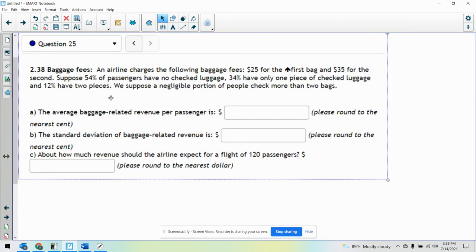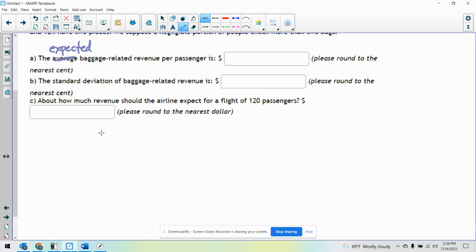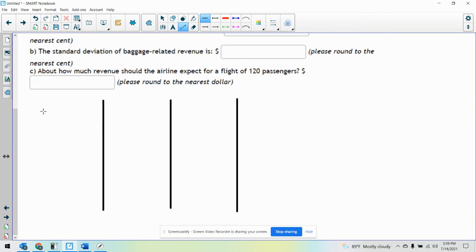So the first one you can do. The airline charges the following baggage fee: $25 for the first bag, $35 for the second. Suppose 54% of passengers have no checked luggage, 34% have only one piece of checked luggage, and 12% have two pieces. The first question says the average baggage related revenue per passenger is blank. As soon as you see average, you can also change that to expected. So remember when we do expected value problems, I like to draw this chart with three vertical lines.